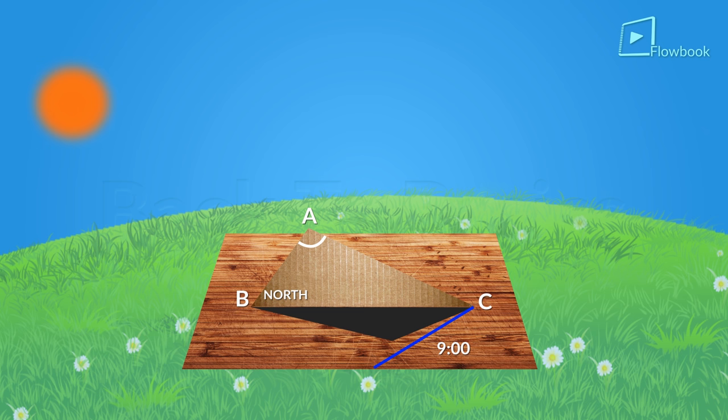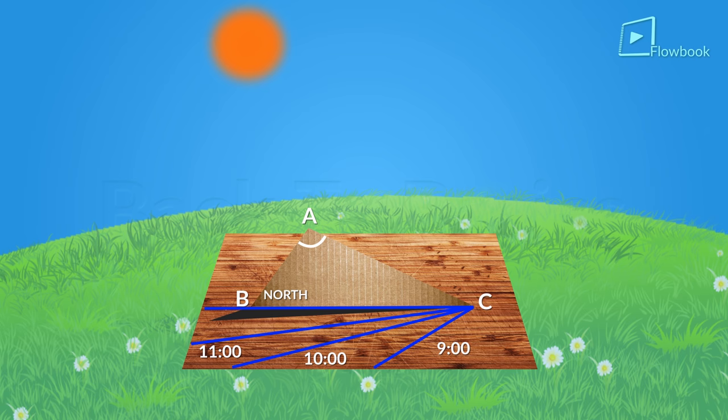Then draw lines of the shadow of side AC at one hour intervals by using a clock throughout the day till sunset and mark the time for each line.